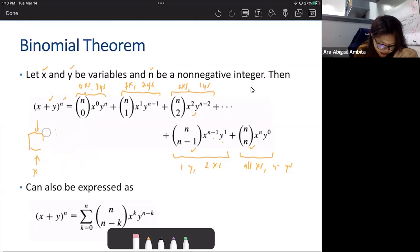You can see that the exponents here of x and y are all summing up into n. In this, we have 0 plus n, so that would give us n. What about this? This is 1 plus n minus 1. This also gives us n. And this is 2 plus n minus 2. So this will also give us n.